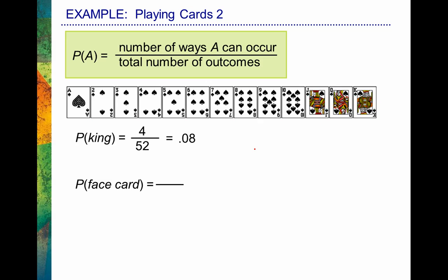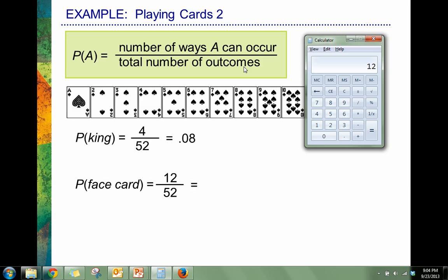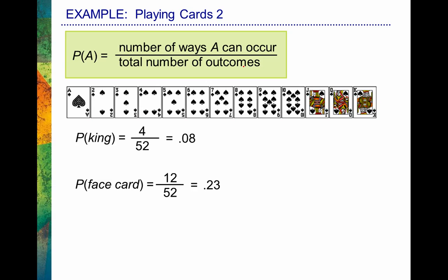What about the probability of randomly selecting a face card from a full deck? Let's think about cards that literally have faces — there are three face cards (jack, queen, king) for any particular suit. We know there are four different suits, so 3 times 4 equals 12 different face cards overall. The total number of all outcomes is 52 cards, all equally likely. So we're looking at 12 possible ways a face card can occur out of 52. 12 divided by 52 equals 0.23, so about 23% of the time we would randomly select a face card.